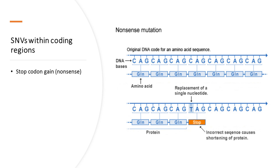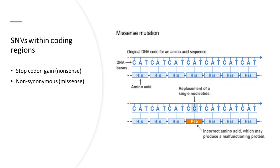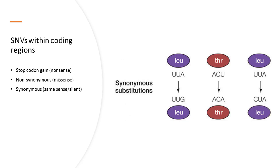In a second example, the adenine nucleotide is changed to cytosine; as a result, the codon CAT that used to encode the amino acid histidine now becomes CCT, which encodes proline. This SNV is called a non-synonymous or missense SNV. Because the codons are degenerate, many SNVs do not cause amino acid changes — these are called synonymous, same-sense, or silent SNVs.